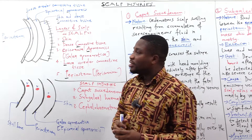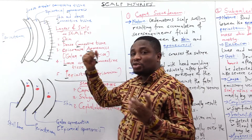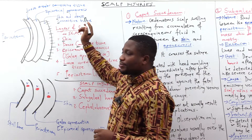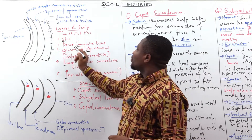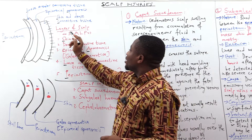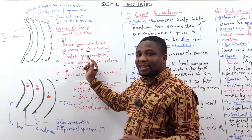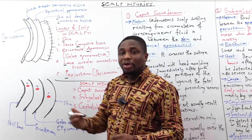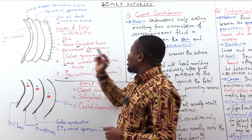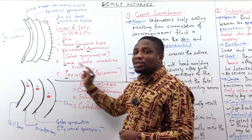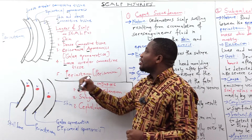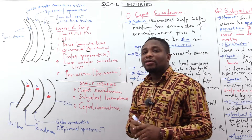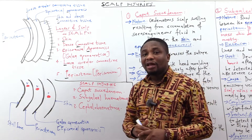Back to the mnemonic SCALP: S stands for the skin; C stands for the connective tissues, which are dense; A refers to the aponeurosis — that is the epicranial aponeurosis or gallea aponeurotica, which are synonyms; L is the loose areolar connective tissue; and P stands for the periosteum, or what we call the pericranium, since it covers the scalp bones.